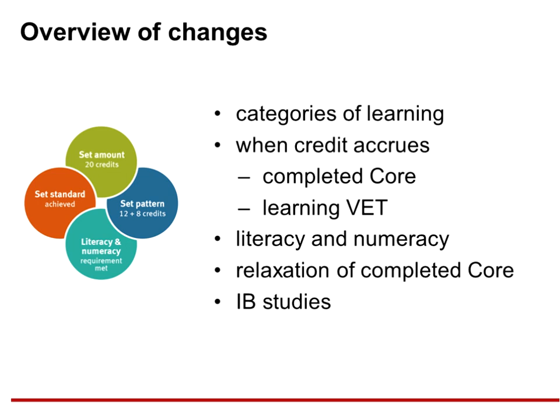Another update is when credit accrues, as a result of when schools will report results to the QCAA. In general and applied subjects, results will be reported after Unit 1, after Unit 2, and after the Unit 3 and 4 pair. Unit 3 and 4 will always be grouped as a pair for reporting of results, allowing equity between different subjects as Unit 3 and Unit 4 may carry different percentages of the overall result. Students will be able to see their progressive results in their learning accounts. In the new QCE there is no conceding of semesters — credit will accrue when the set standard is met. Vocational education and training will accrue credit for new learning, with limits on the amount of learning from training packages and the use of credit transfer.